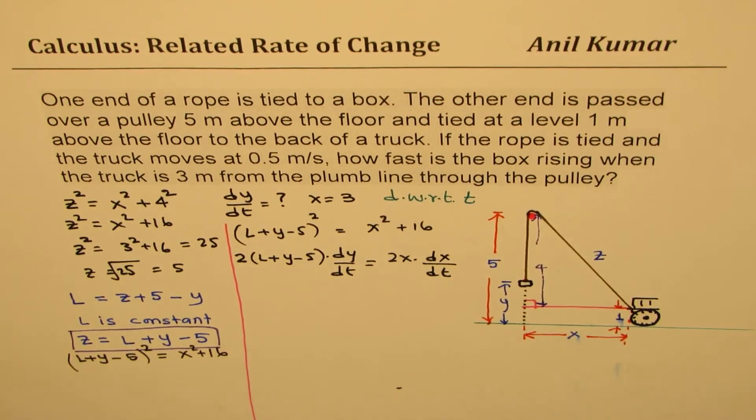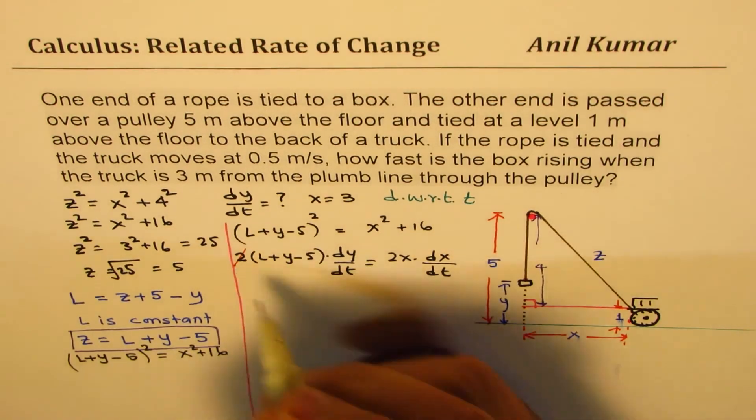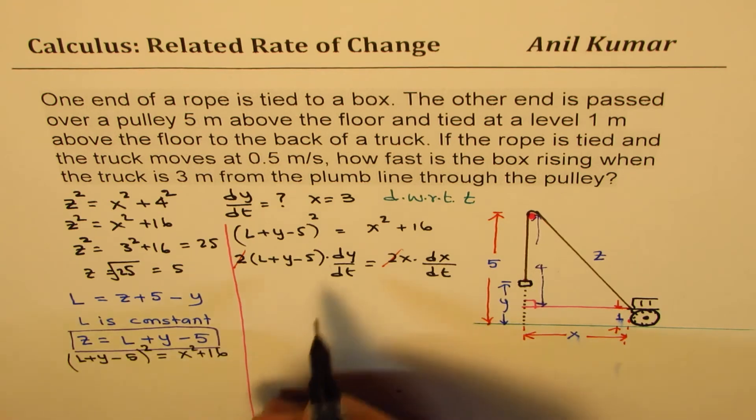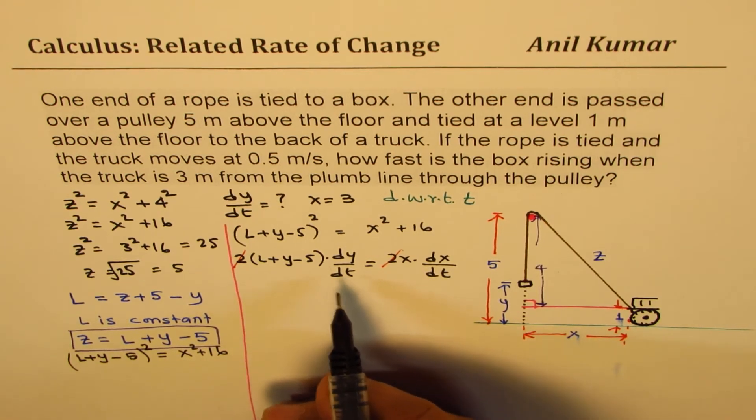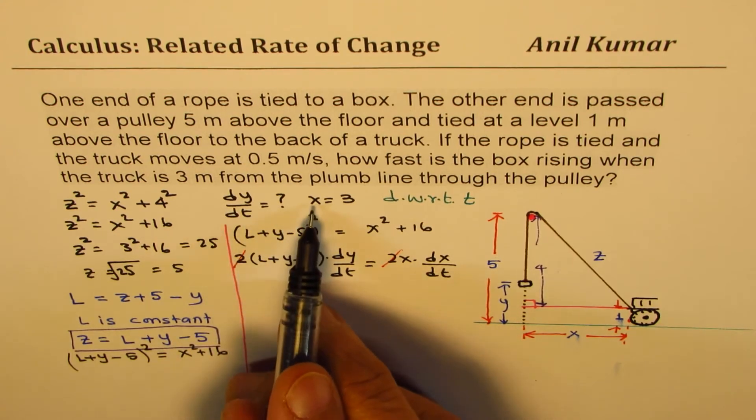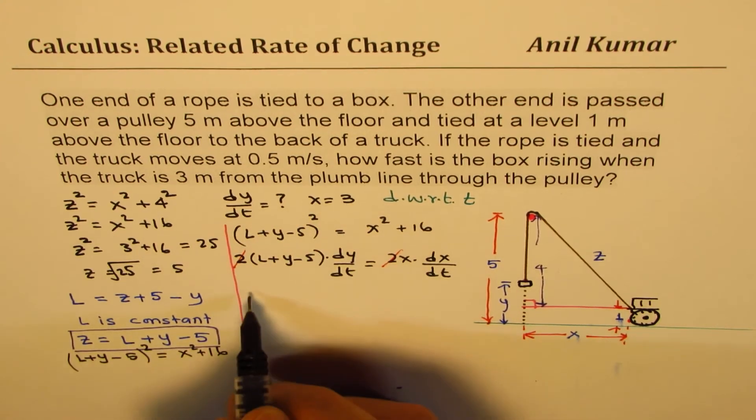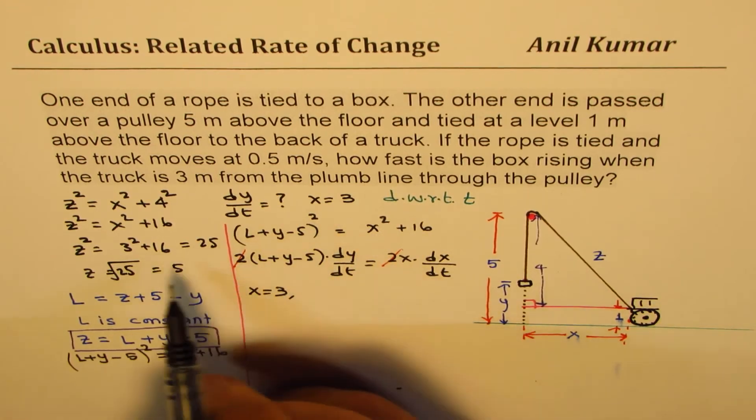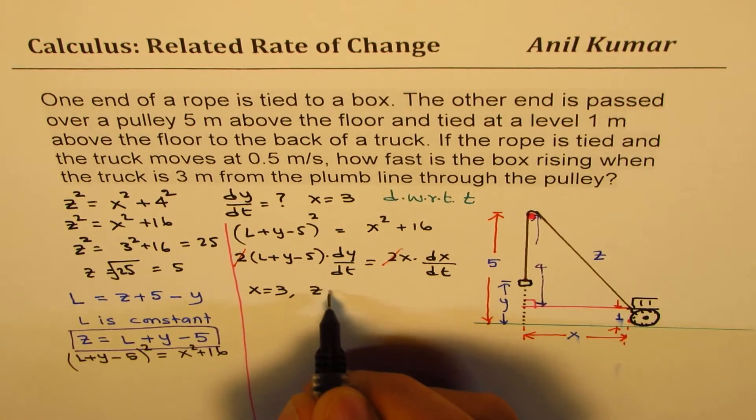So we can now cancel, simplify this a bit, so we get this portion. We want dy/dt, so let's isolate dy/dt. Or we can just keep it like this. We want to find what dy/dt is when X equals 3. So if X equals 3, we know Z equals 5.